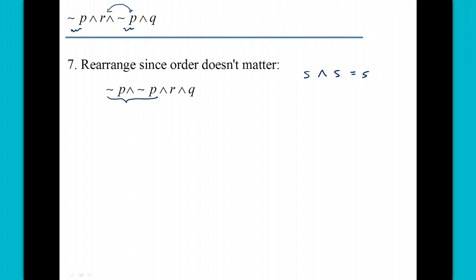Me and me is just me. It's either going to be true and true which is going to be true, or it's going to be false and false which is going to be false. The and's truth values match S's truth values.